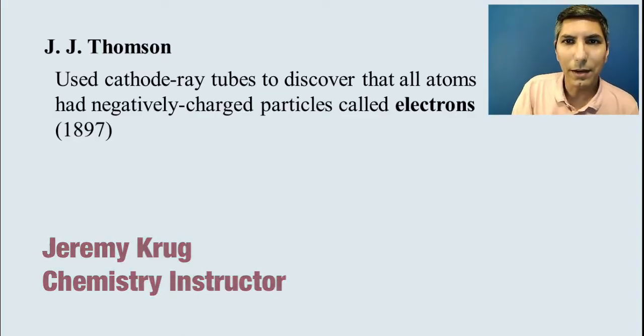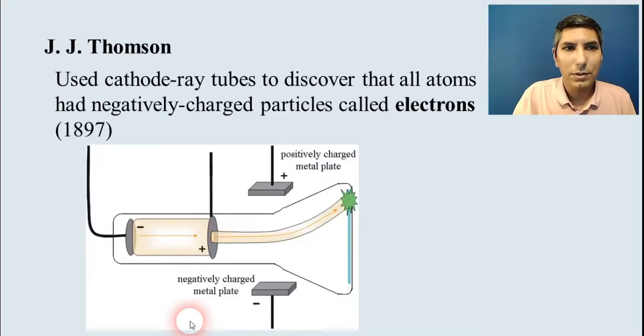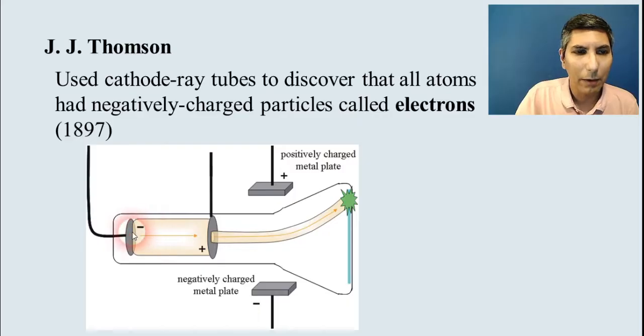Now, this story kind of goes all the way back to around 1897 when a scientist named J.J. Thompson was able to use something called a cathode ray tube to pass a ray of particles in there. And he had a positively charged metal plate and a negatively charged metal plate. And he noticed that things were being deflected in the direction of the positive plate.